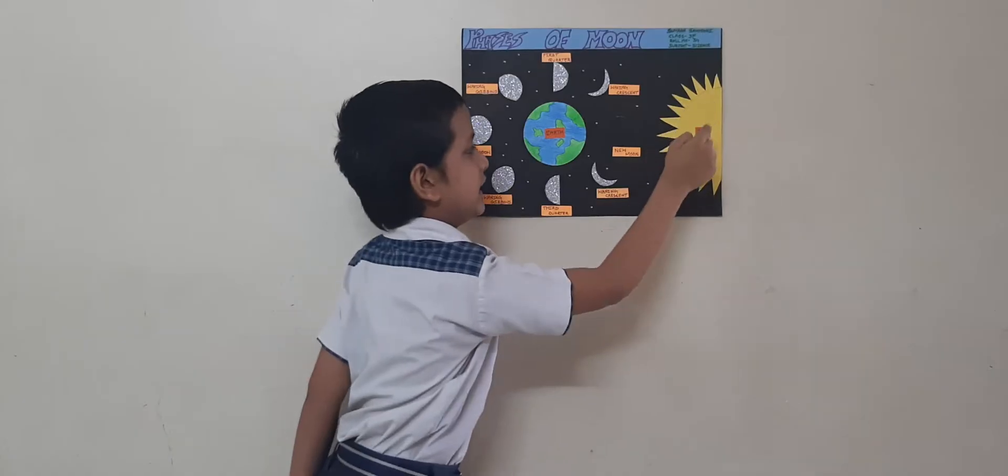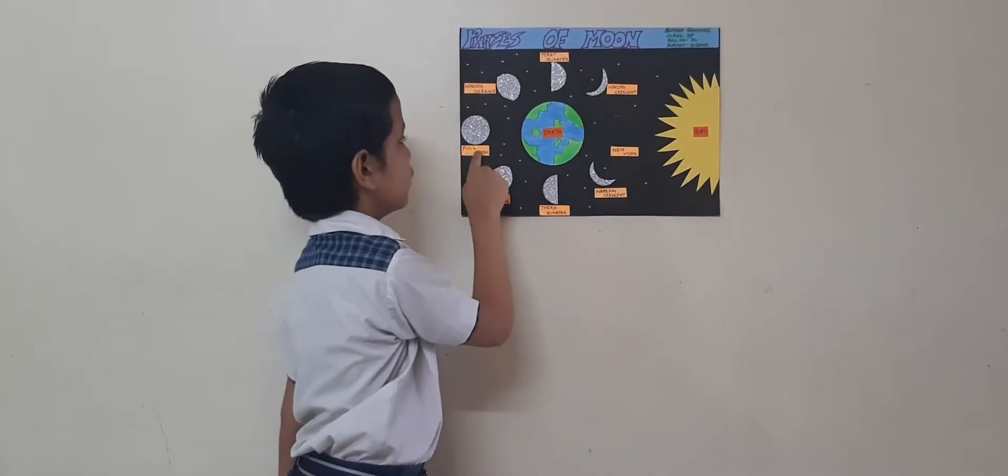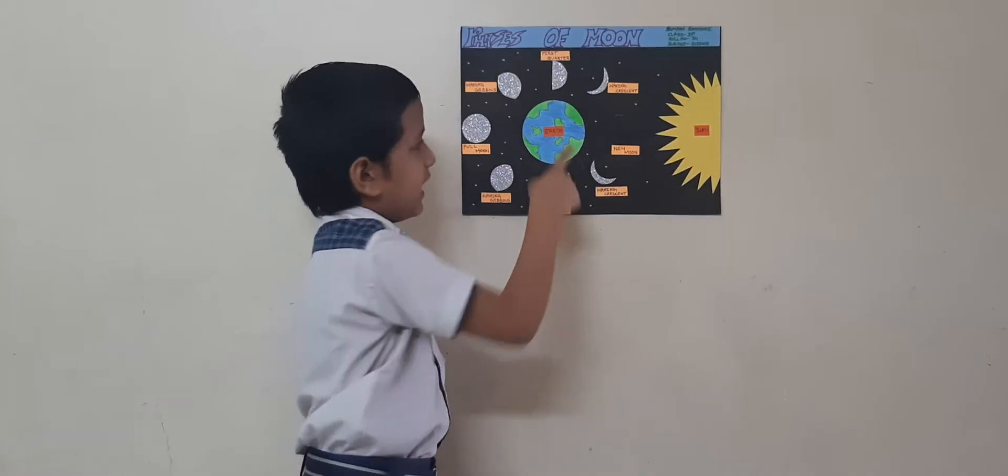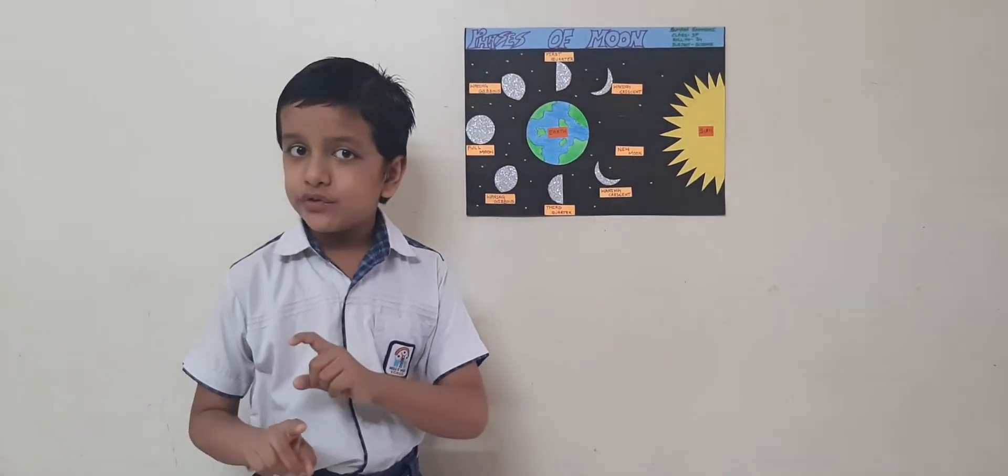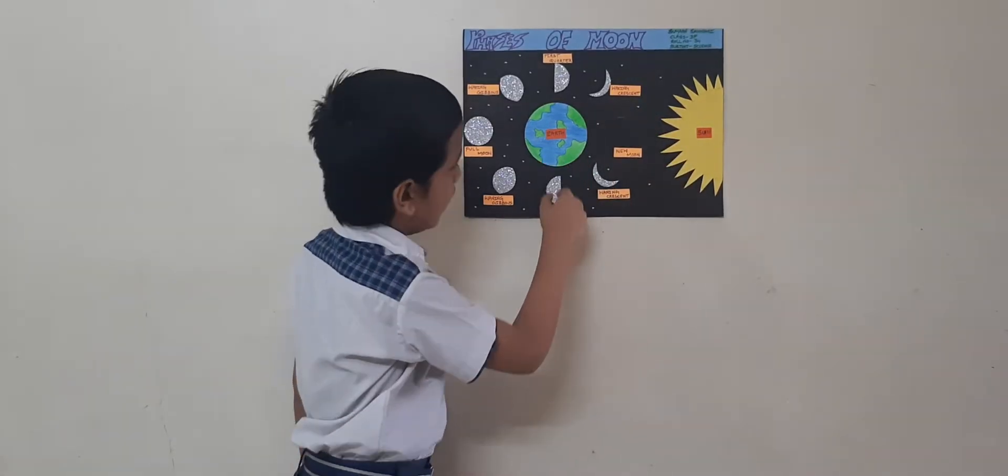This is Earth, this is the Sun, and these are all the phases of the moon. The moon, Earth's natural satellite, has no light of its own but shines when sunlight is reflected from its surface.